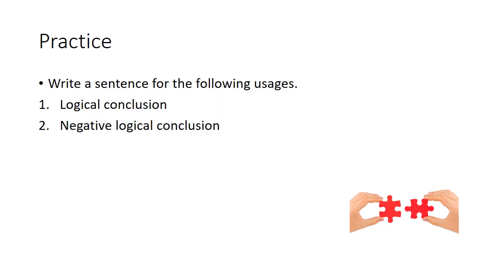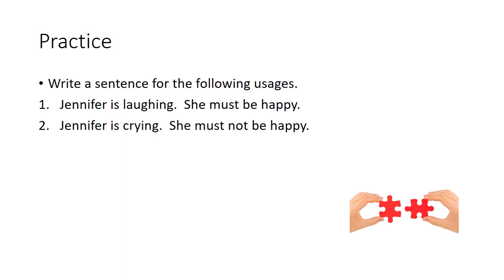Let's take a second here and again pause the video and write a sentence for each of these following usages and then restart the video and I'll show you my answers. So here's this one. Jennifer is laughing. She must be happy. We're taking the information that she's laughing and the conclusion that we make is that she's happy. The opposite of that is Jennifer's crying. She must not be happy. We're taking the information that she's crying and we're making the logical conclusion that she's not happy.